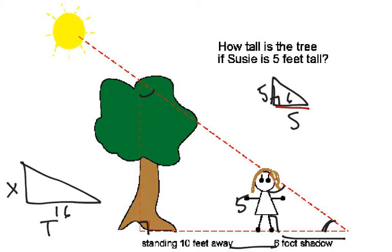So we can start with 6 over 16, and if you want, you can reduce this if it makes you feel more comfortable, equals 5 over X. And again, we need to line up the triangles in order.